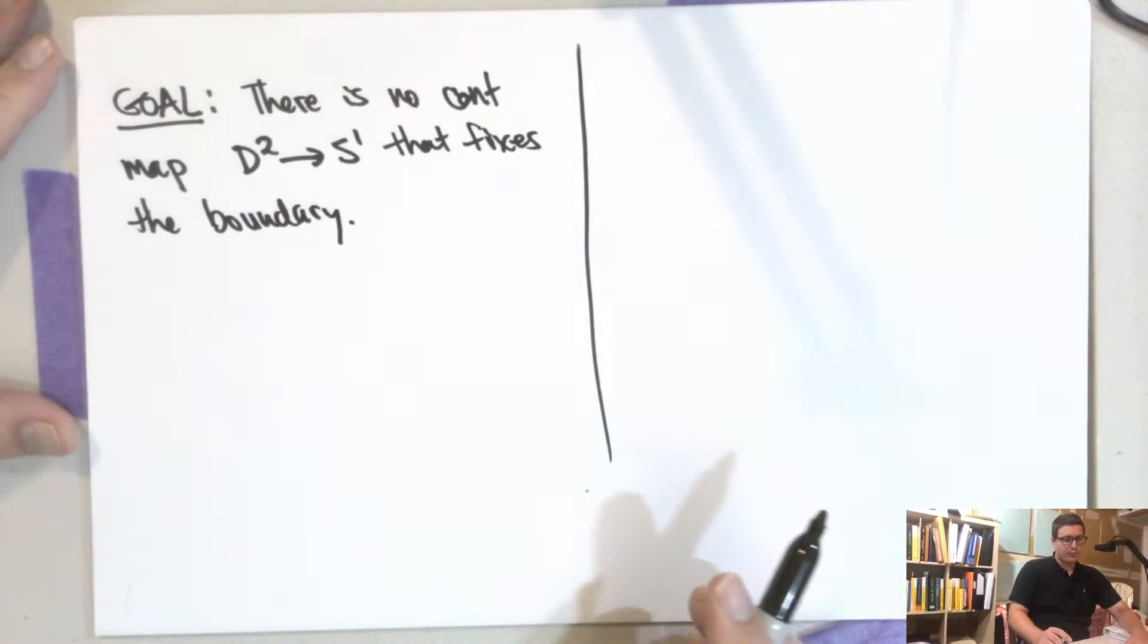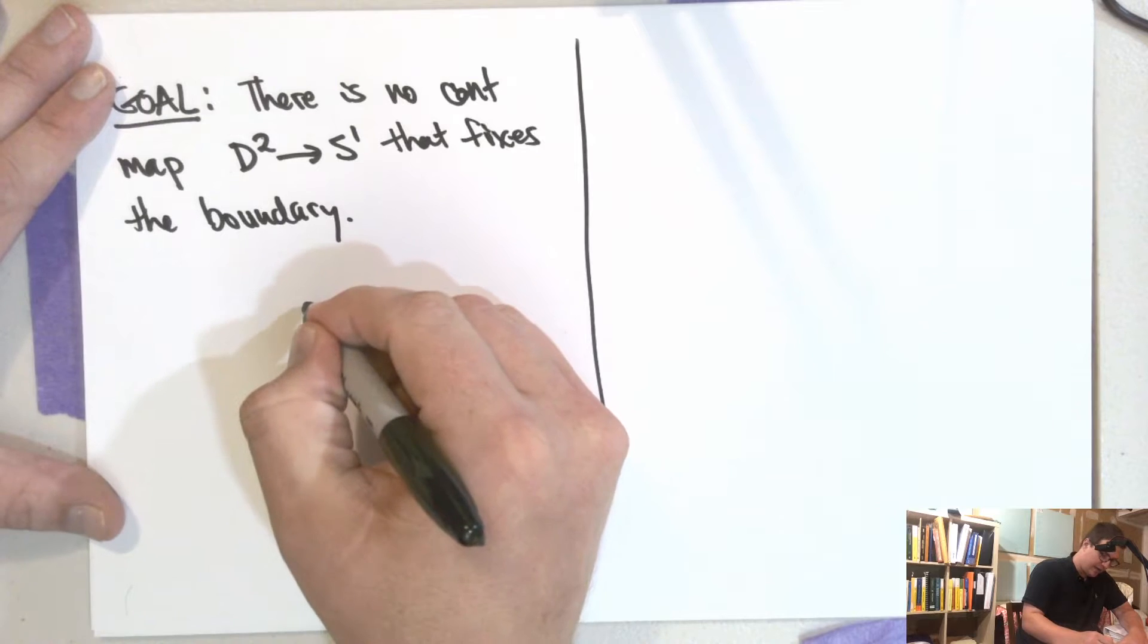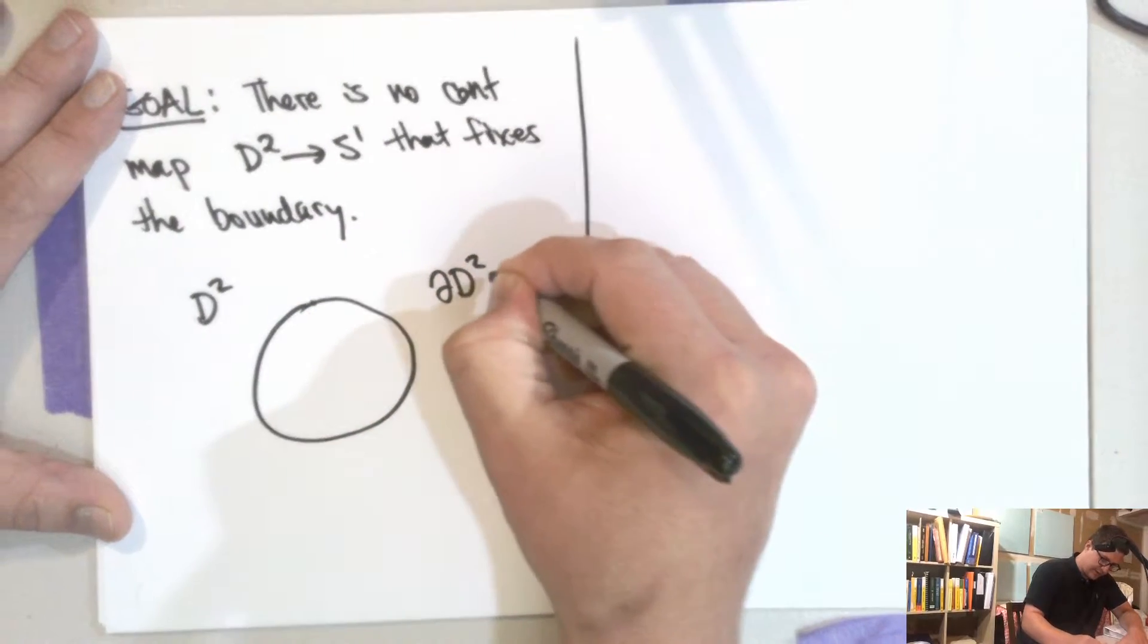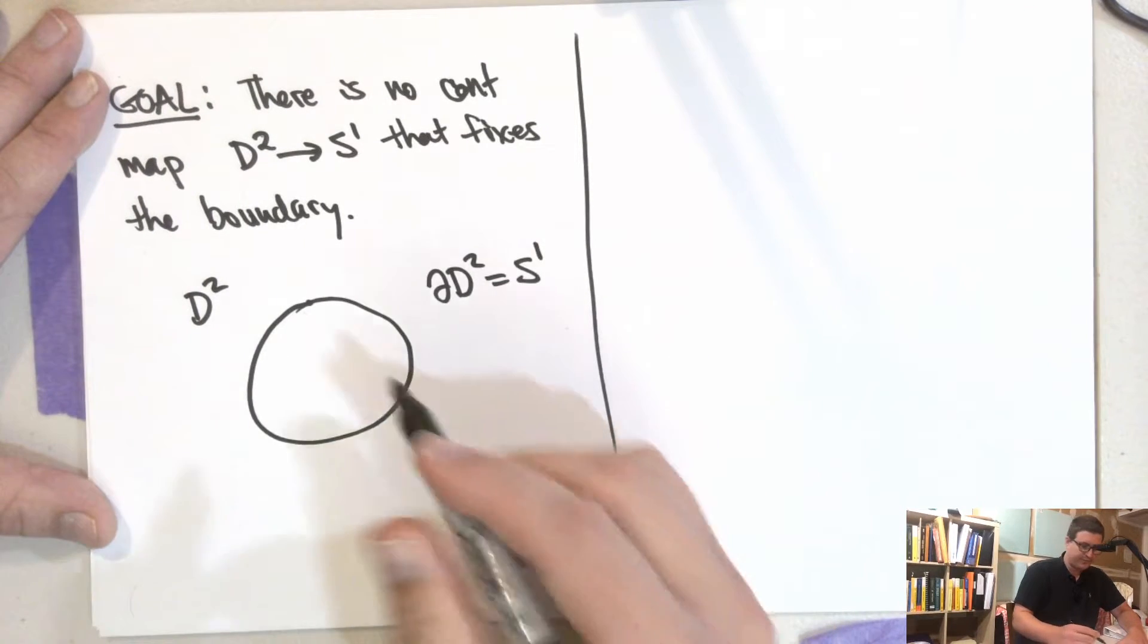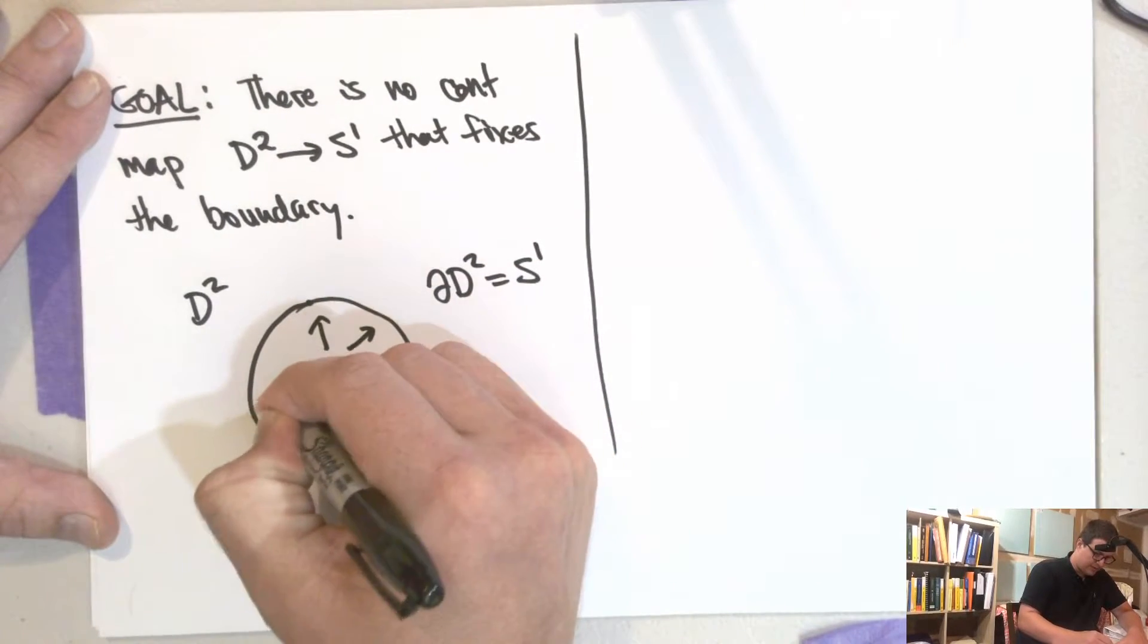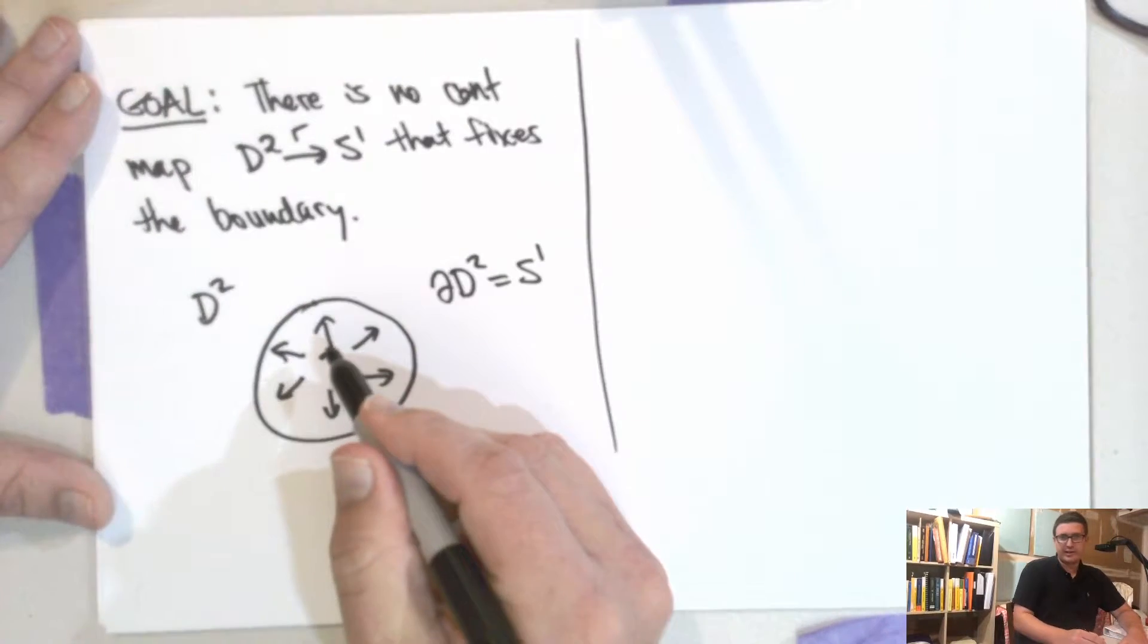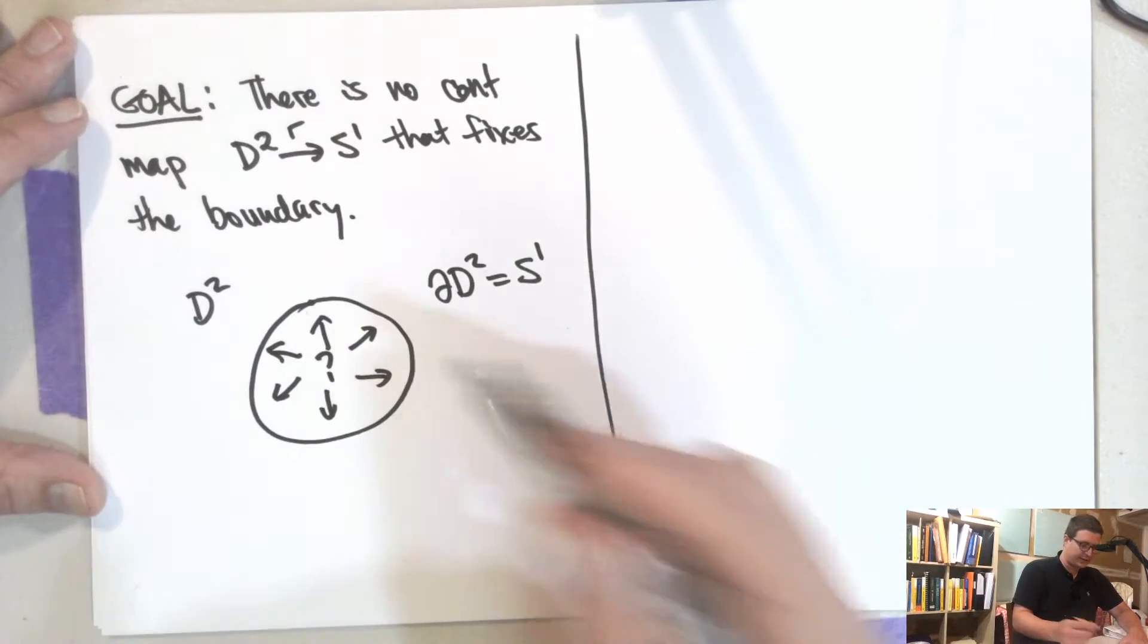So there's no retract. In particular I'm looking for, there's no retract. So here's the disk, here's D². And then the boundary here, ∂D², this is S¹. So this is the one sphere or the circle. And so I want to find some map here. Does there exist a map that can just take this thing here to its boundary in a continuous way? And so the answer to this is no.